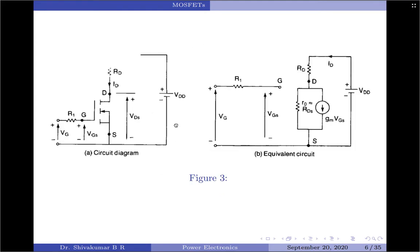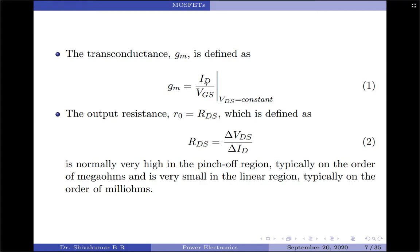The steady-state model, which is the same for both depletion type and enhancement type MOSFETs, is shown in figure 3A and its equivalent circuit is shown in figure 3B. The transconductance is given by GM equal to drain current ID divided by gate-to-source voltage VGS at a given value of VDS. The output resistance R0, equal to the drain-to-source resistance, is given by the change in VDS divided by the change in drain current.